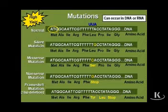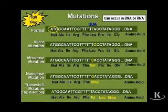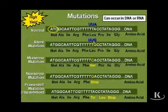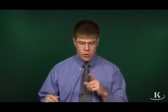The first mutation we're going to look at is called a silent mutation. In this case, the A in the TTA triplet is going to be mutated to a G, so now instead of reading TTA, this codon reads TTG. This corresponds to a UUG in the messenger RNA. UUG also encodes leucine — the same amino acid — so the mutation is silent. Nobody has to know, because leucine is still going to be in the protein.